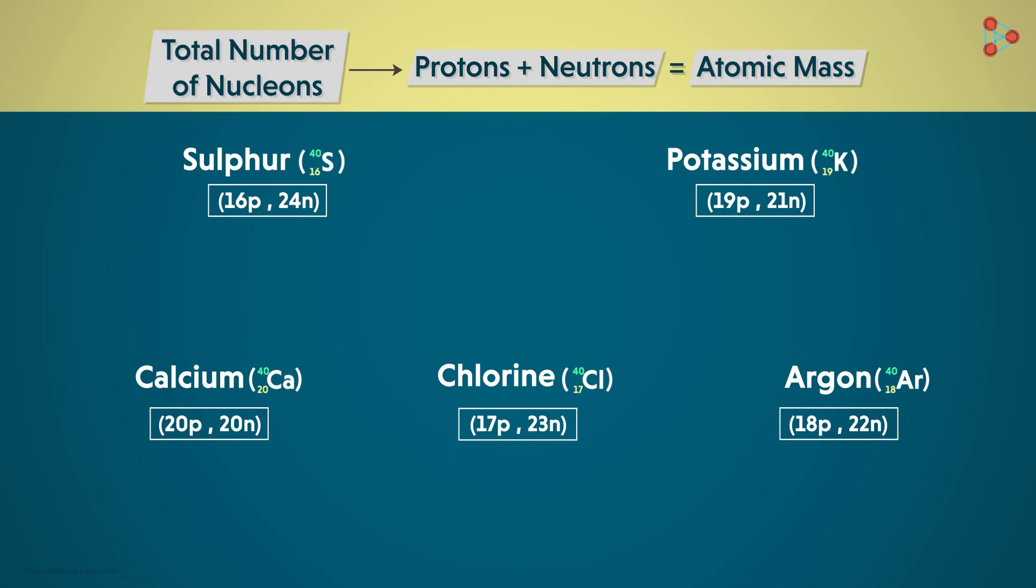How? It's simple math! One of the sulphur isotopes that we have taken as an example has 16 protons and 24 neutrons. So the atomic mass of this isotope has to be 40 units, that's 16 plus 24.